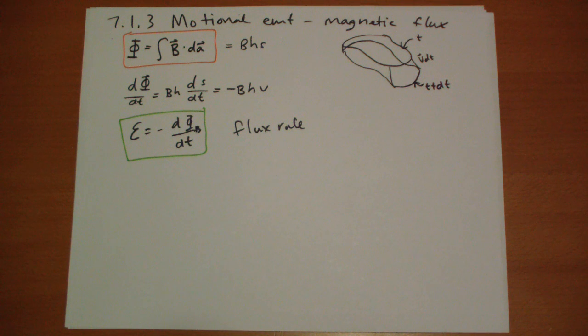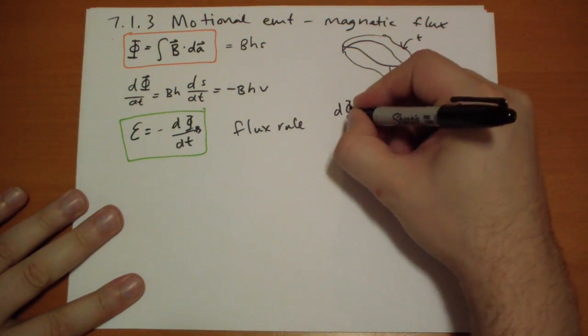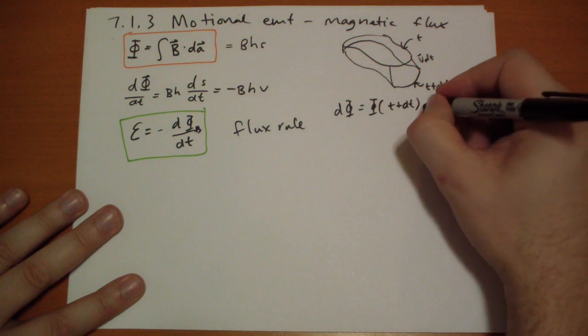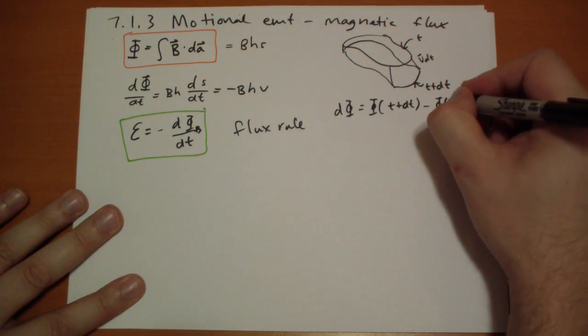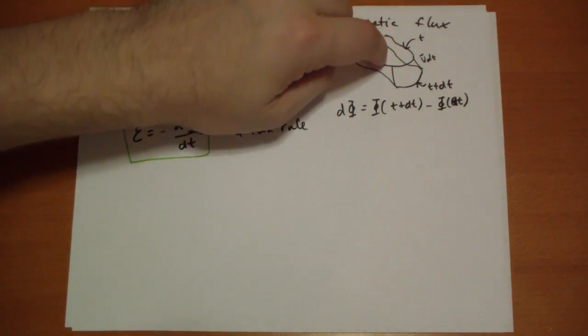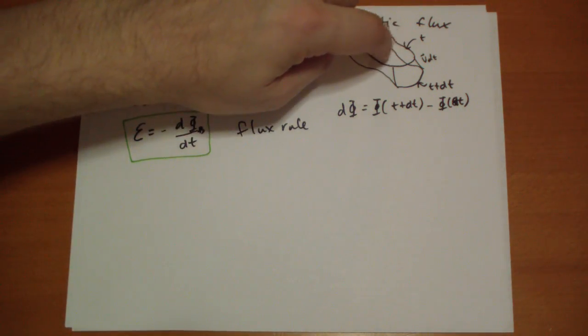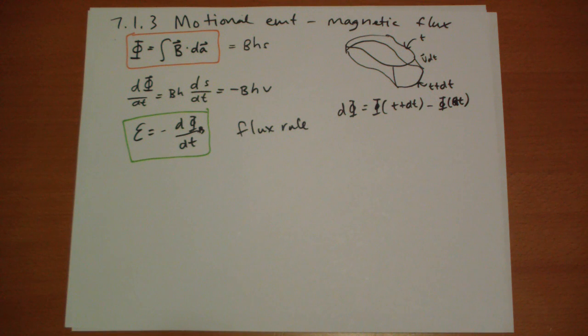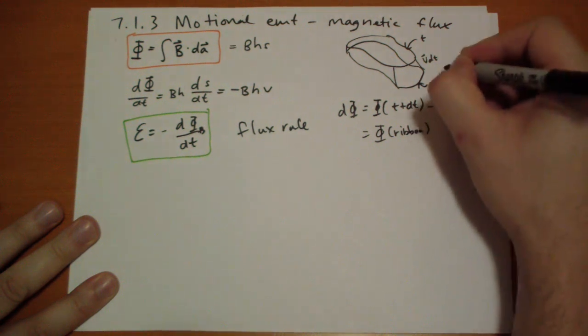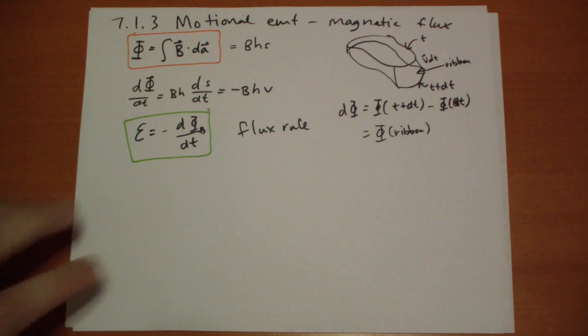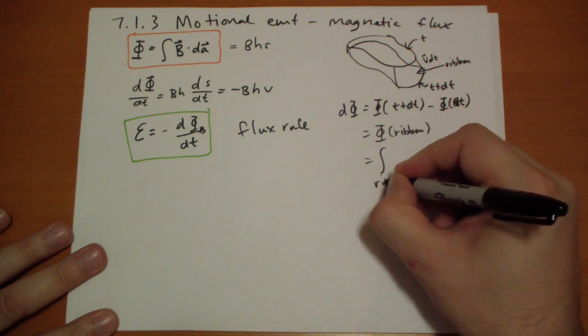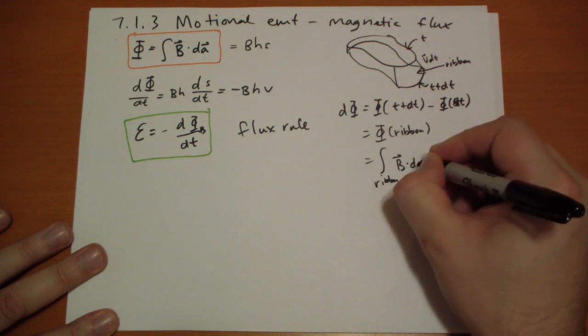So the change in flux, D phi, is equal to the new flux minus the old flux. So we calculate the flux at the position at some infinitesimal time later, and the flux at the position before. And that will actually give us the flux of the ribbon. And so you can actually calculate that with the integral, the surface integral, along the ribbon of the B vector dot dA vector.